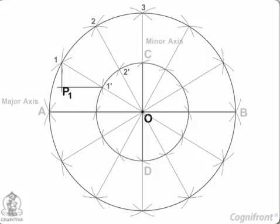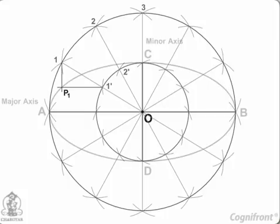The point P1 where these two lines intersect is on the required ellipse.